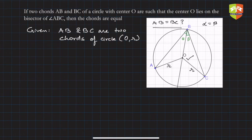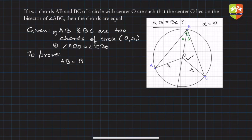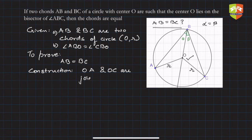To prove: AB is equal to BC. Also given: angle ABO is equal to angle CBO, because BO is the angle bisector. Construction: join OA and OC. Now we have two triangles and we need to prove that they are congruent.